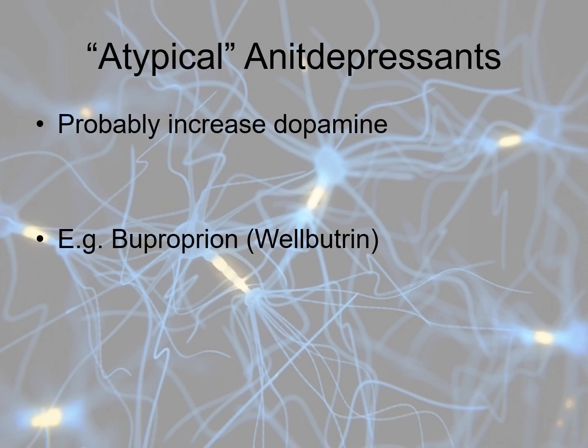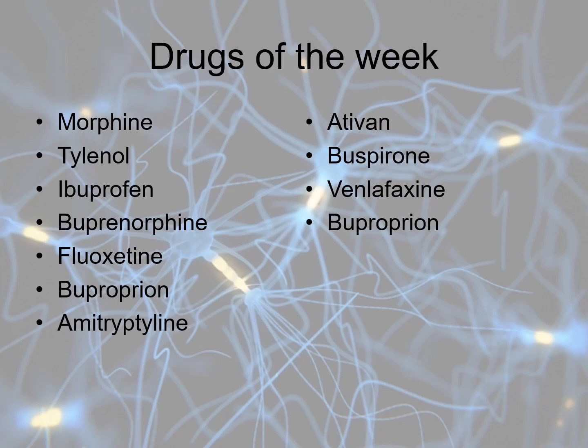Atypical antidepressants like Wellbutrin — generic name bupropion — are thought to increase dopamine levels. One concerning side effect is seizures, though in 30 years I've only seen one patient have seizures, and that was someone who tried to overdose by taking ten 300-milligram tablets. If someone already has a history of seizures, we'd probably avoid this medication. Drugs of the week will be posted, and I encourage you all to try to answer each other's questions and work as a team.